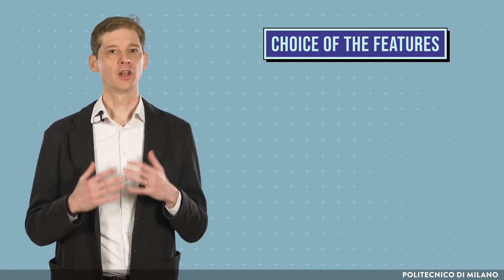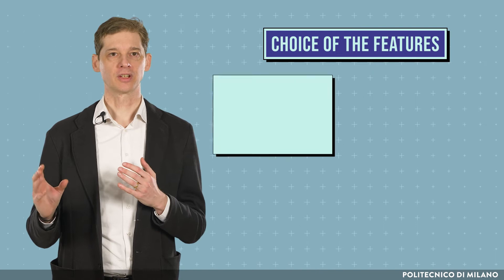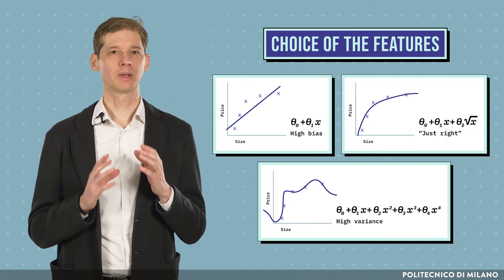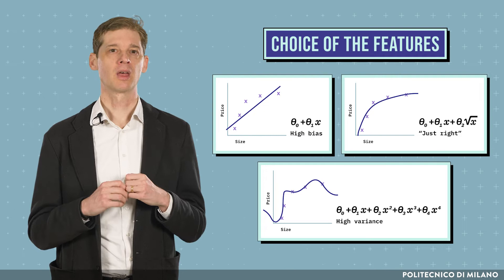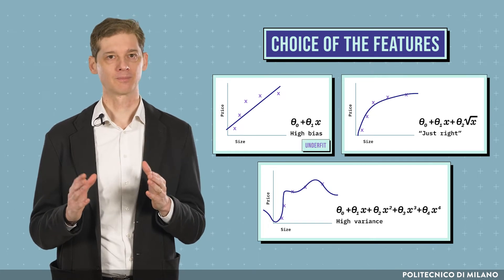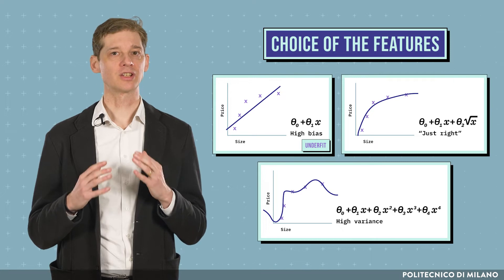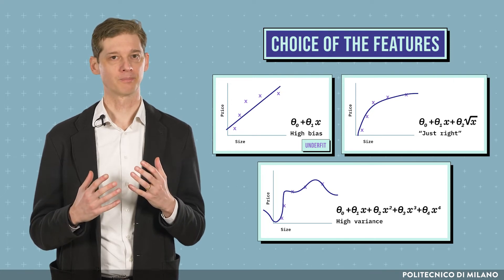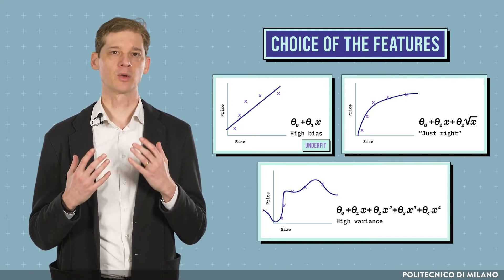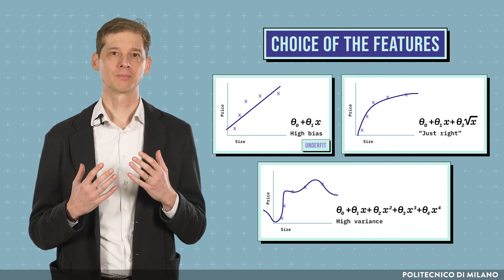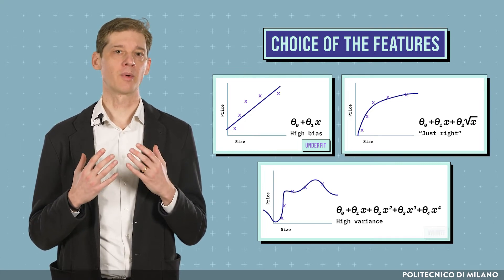The performance of a linear model is highly dependent on the choice of the features. Learning a model with a few features is easier, but the model might be unable to explain the input-output relationship, thus underfitting the data. Instead, considering a large number of features increases the expressiveness of the model. But we need a lot of data to accurately train its parameters. Otherwise, we will suffer from overfitting.